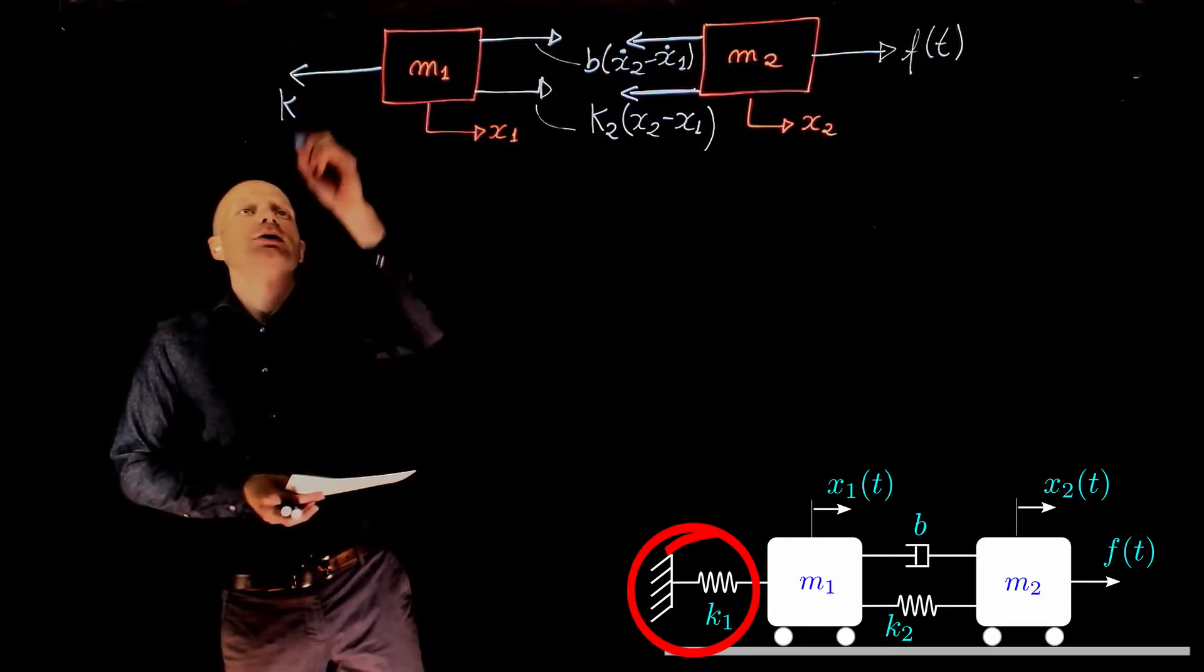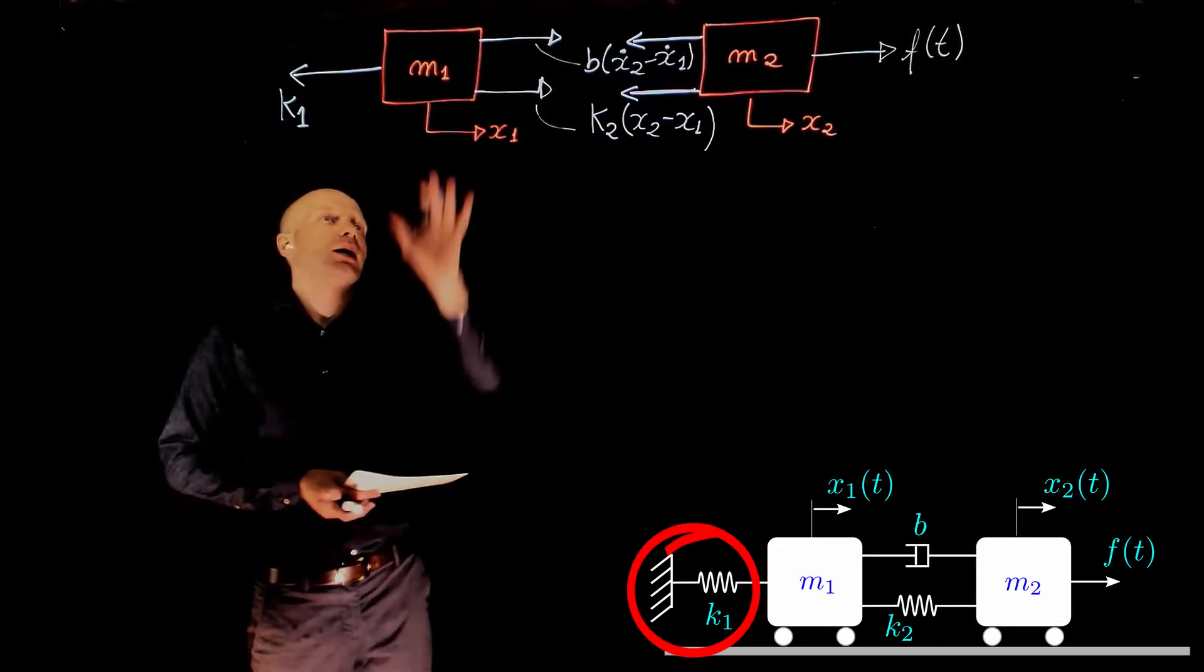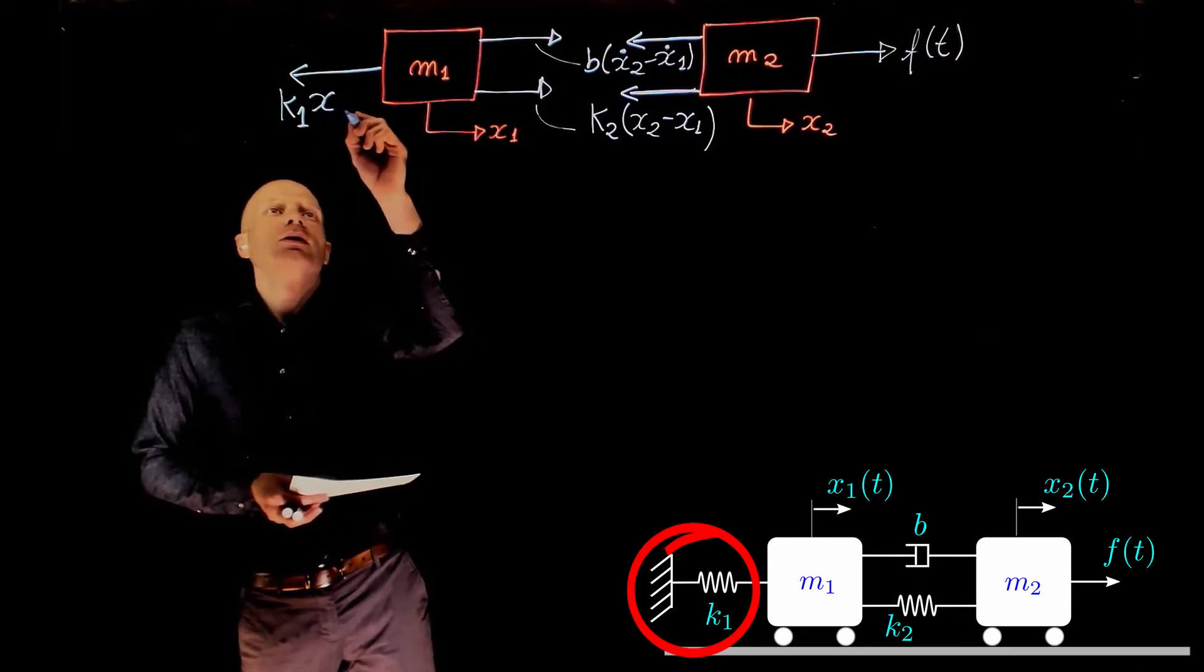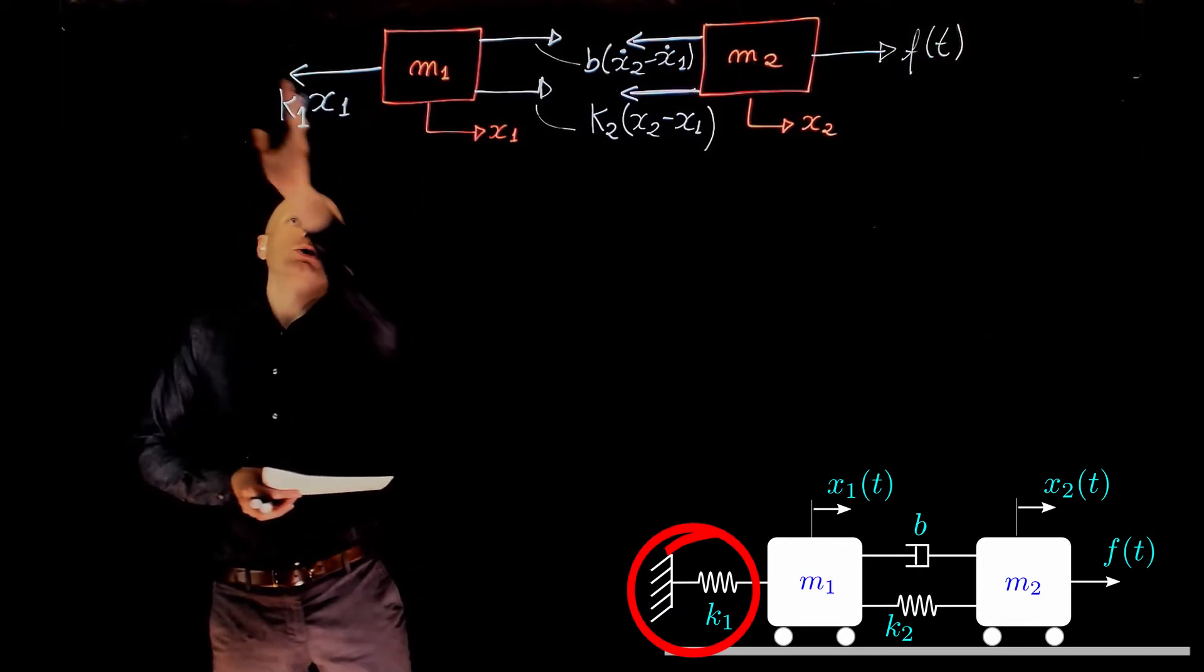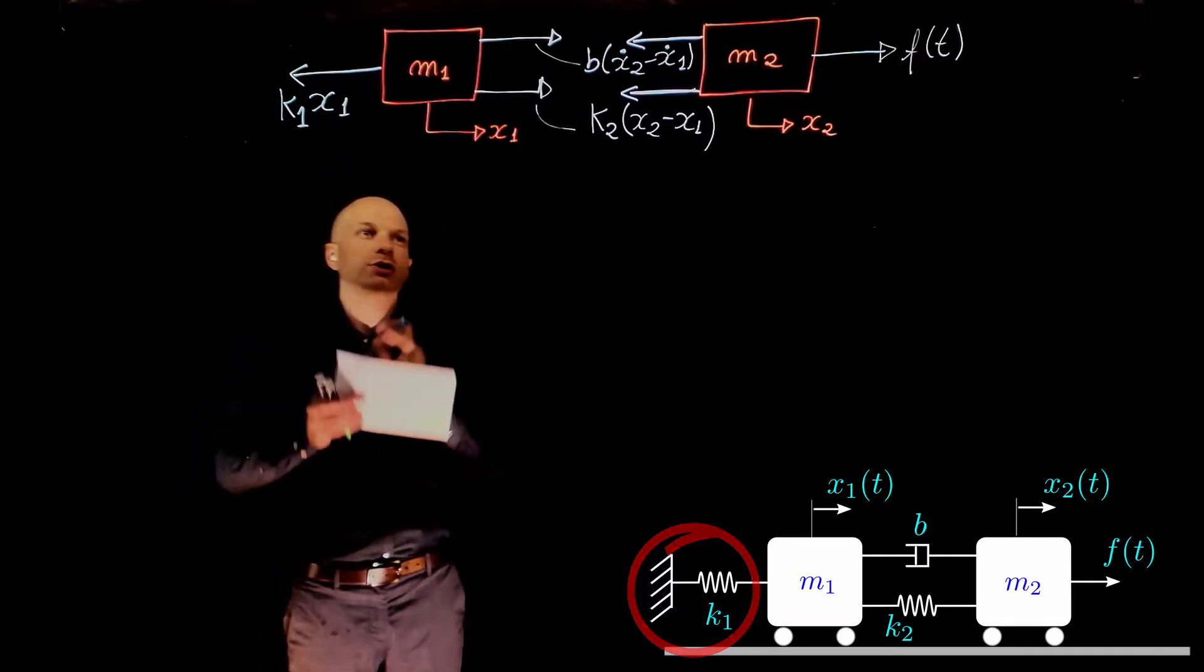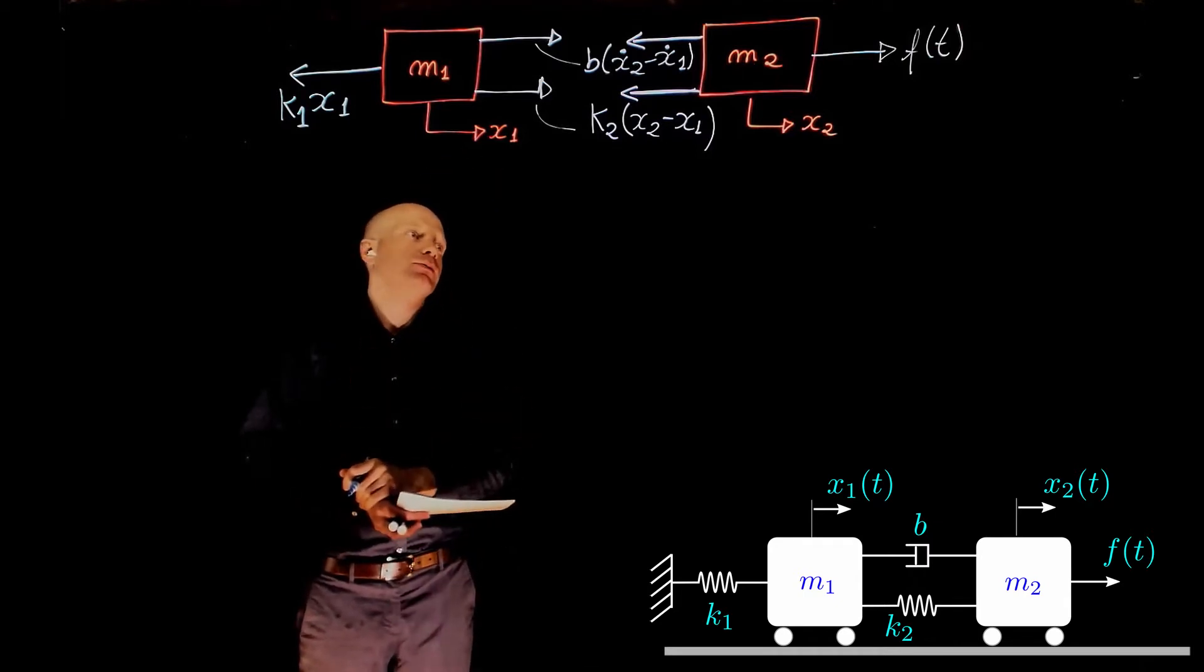The force here is the stiffness of that spring, k1, times the displacement of mass M1, that is x1. The other end of the spring is fixed, so there is no displacement on the other end. The total compression or stretch of that spring is simply x1.